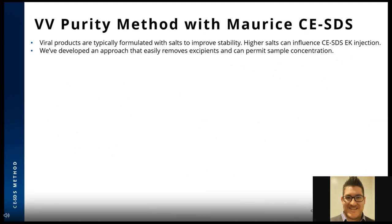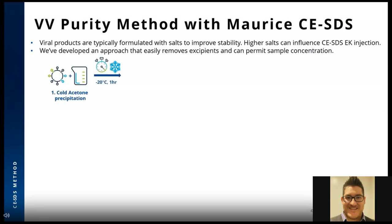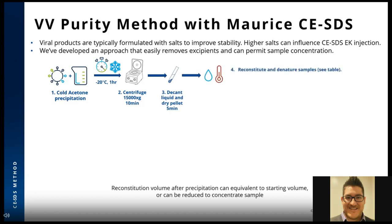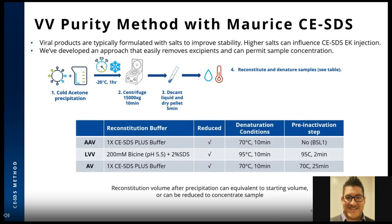Let's walk through our viral vector purity method for Maurice CESDS. Because viral vectors are typically formulated with salts to improve stability, and these salts can influence CESDS electrokinetic injection, we developed an approach that easily removes excipients and can permit sample concentration. First, we take an AAV virus sample and add four times the volume of ice-cold acetone to precipitate the virus. We like to put these samples at minus 20°C for an hour, but even immediate precipitation does work.